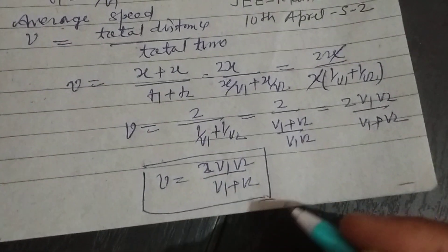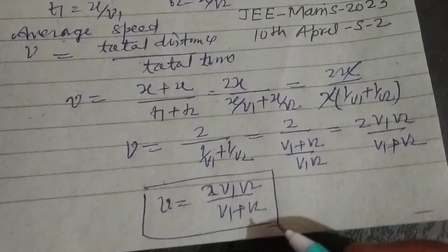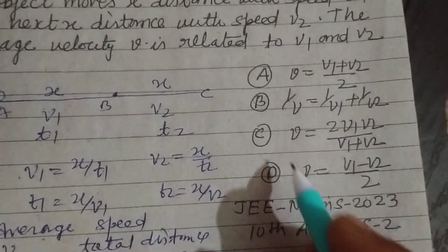So students, this is the relation between average velocity and the individual speeds. The answer to this question is found in option C.